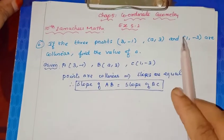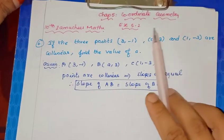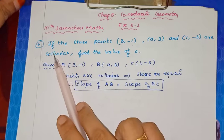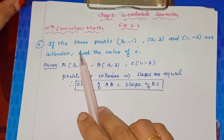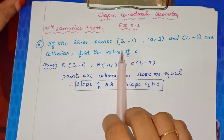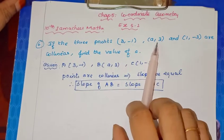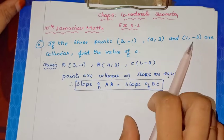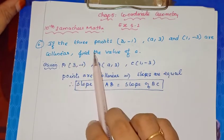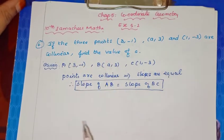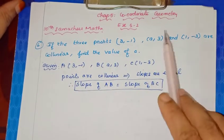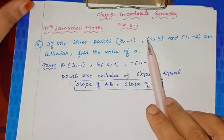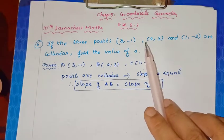Students, in Chapter 5 coordinate geometry, Exercise 5.2, let's look at the 6th sum. If the 3 points (3, -1), (A, 3), and (1, -3) are collinear, find the value of A. So 3 points are given, there is an unknown value, and they are said to be collinear.